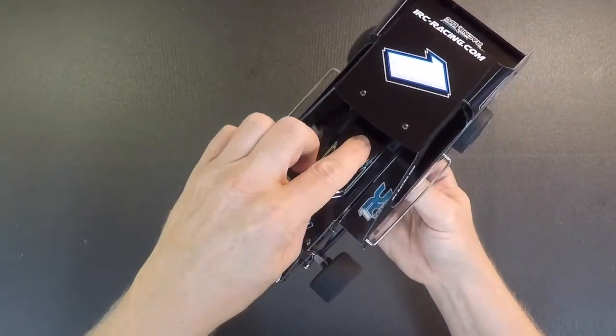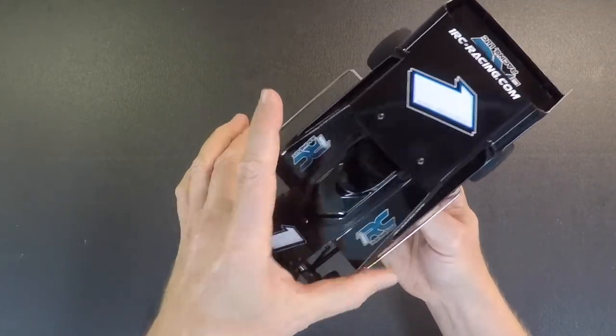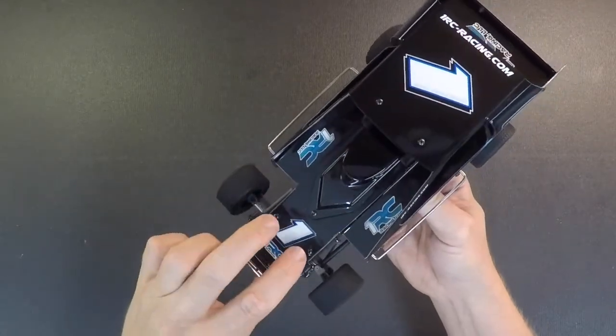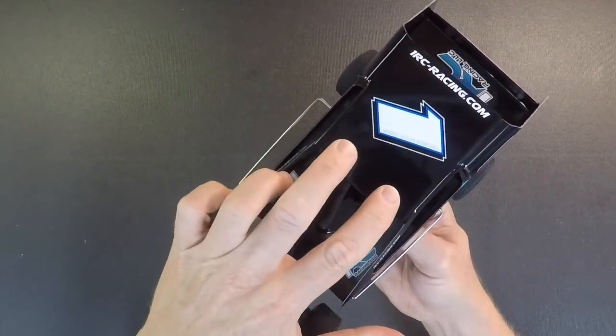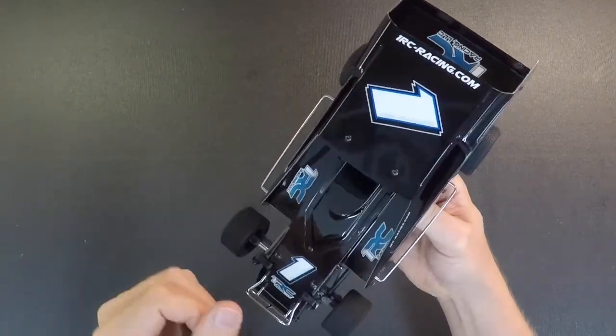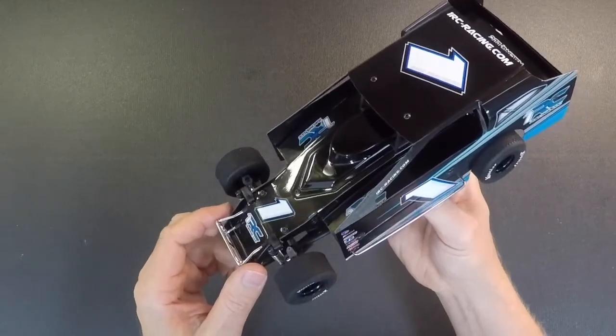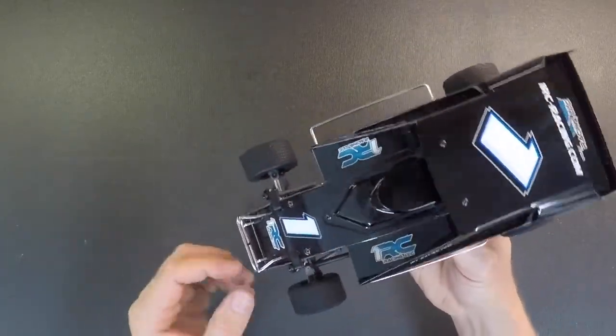If you do want to take the body off, just take the hood off there. Take the front bumper off, the side nerf bars off. You can leave the back one on. There's two screws up here. There's two here and then two in the back and then the body will come off. Again, you got to take the side nerf bars off and the front to get that off. You can take that off pretty easy.